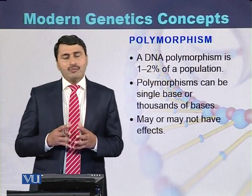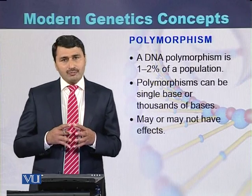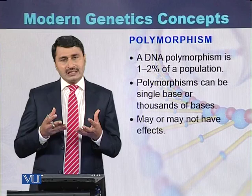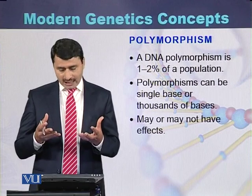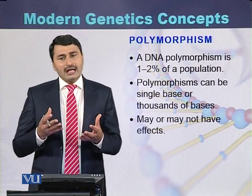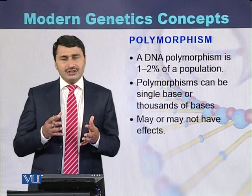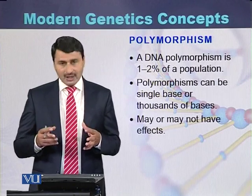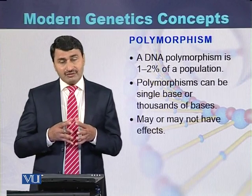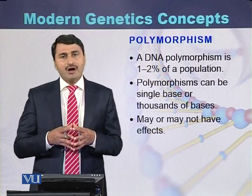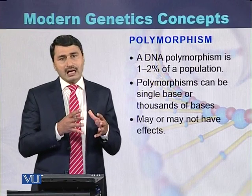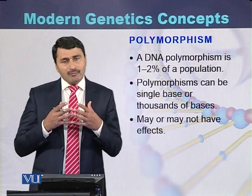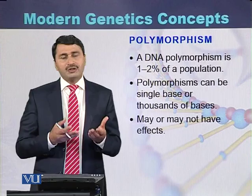What is the meaning of polymorphism? Polymorphism is a genetic change in a particular population that is present in more than 1% of the general population. Polymorphism can be a change of a single nucleotide, or sometimes the change extends to thousands of nucleotides. Polymorphism may or may not have an effect on the phenotype. Comparing mutation and polymorphism: mutation is usually present in less than 1% of the population, while polymorphism is present in more than 1% of that particular population.